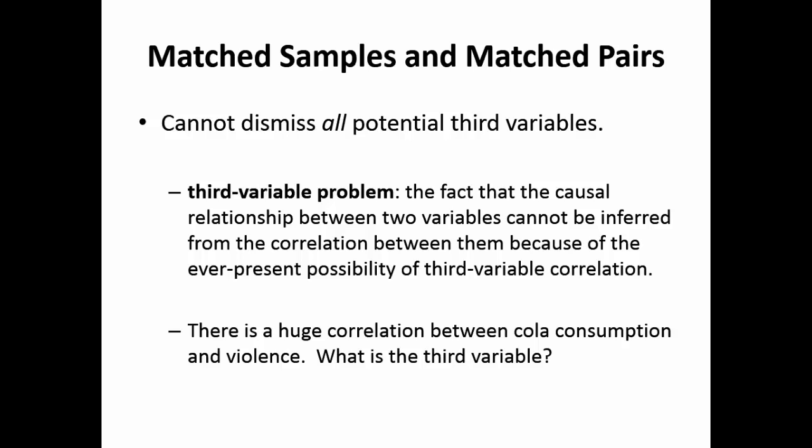There is a huge correlation between Coca-Cola consumption and violence — it's a spurious third variable, meaning it's a random third variable. I wonder what it could be — you should look that up on the internet. And that is our quick summary of correlation versus causation.